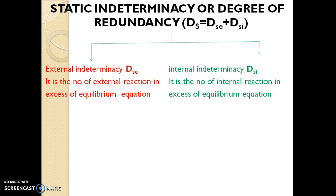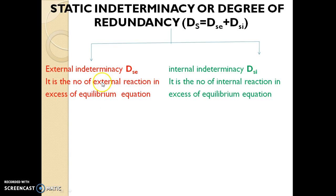Static indeterminacy, or degree of redundancy, is represented by Ds, which is the summation of external indeterminacy Dse and internal indeterminacy Dsi. External indeterminacy Dse is the number of external reactions in excess of equilibrium equations — it generally deals with external reactions.